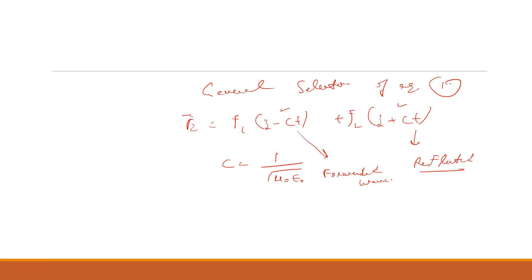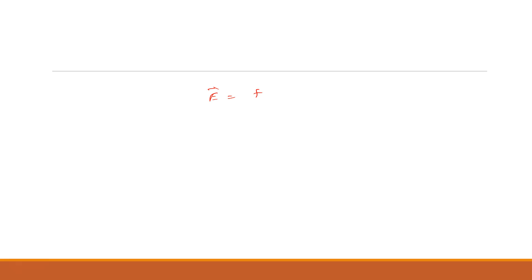For example, if a ball is thrown and hits a surface, it reflects back — similarly, f2 represents the reflected wave. The reflected wave component is present when there is a conductor acting as a reflector; otherwise it is absent. Since we are considering free space propagation, the solution reduces to E = f(z − ct). This is the solution of the uniform plane wave equation in free space.